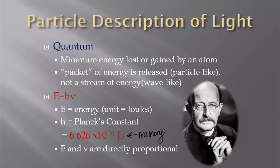We find that E and V are directly proportional. If they're directly proportional, they are divided to equal a constant. If we rearranged the equation to solve for H, we would have E over V. E over V means they're divided to give a constant, so they're directly proportional. And what does directly proportional mean? As one increases, the other also increases — they do the same thing.